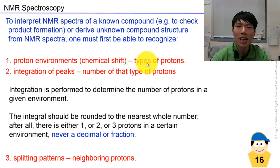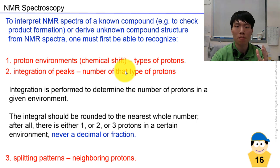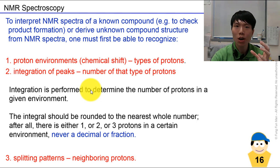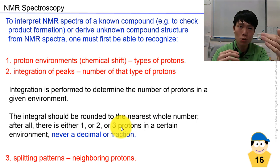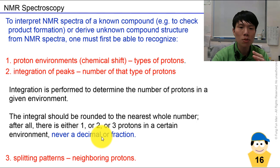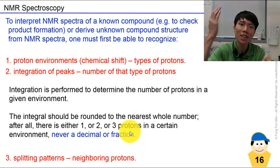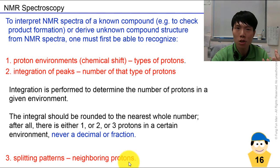When interpreting the NMR spectrum of a known compound to verify or check a mixture, we first recognize the proton environments using chemical shift regions and the integration of peaks, which gives the number of protons in that environment. Remember the ratio — 3:1 could mean 6:2 or 9:3; you can never have a fraction of a proton. The third piece of information is the splitting pattern, which gives you a clue about the number of neighboring protons surrounding it.